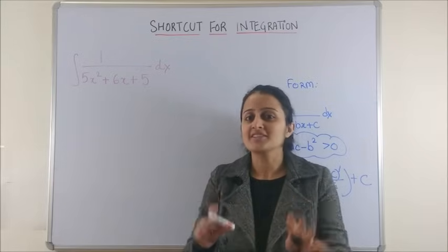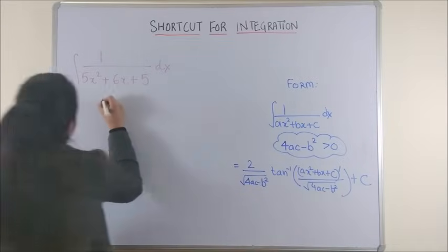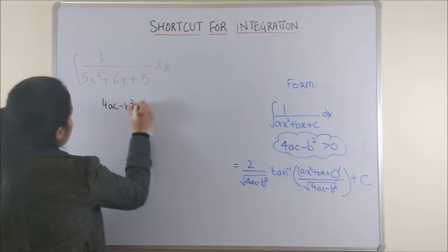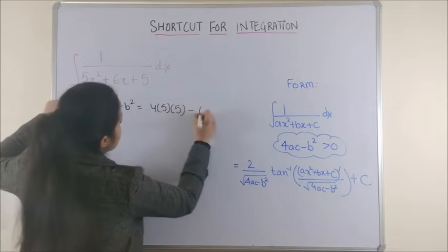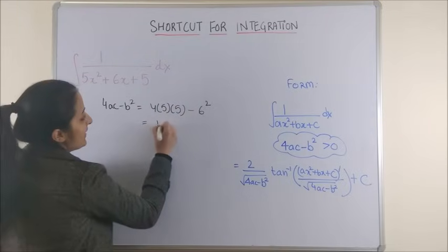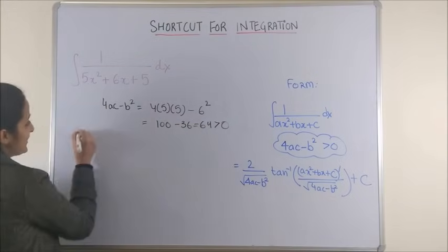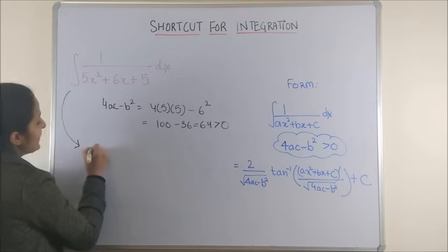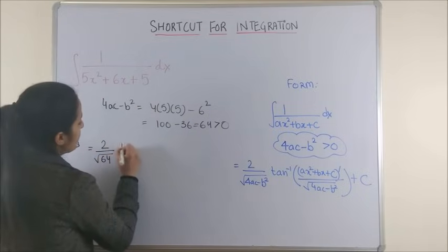Here 4ac minus b square is 4 into 5 into 5 minus 6 square. This would be hundred minus 36, that gives us 64, certainly greater than zero.